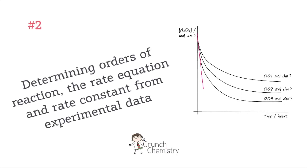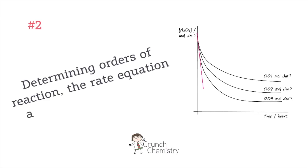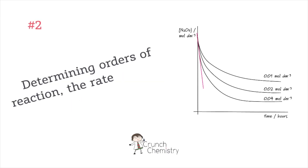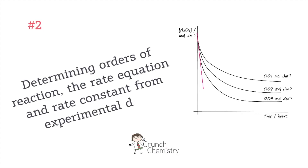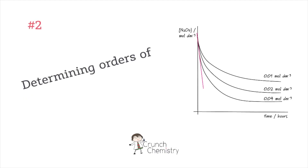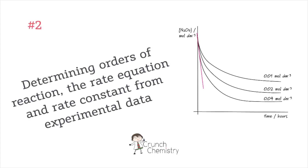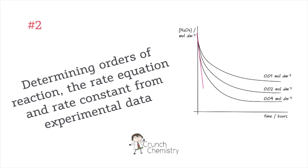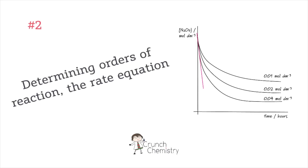In this video I'm going to show you how we can take a set of experimental results for a kinetics reaction and from them figure out the order of reaction with respect to each reactant. We'll write the rate equation or rate law for the reaction and calculate a value for k, the rate constant. And finally I'll share with you a foolproof method for working out the units for k. Let's jump straight in.